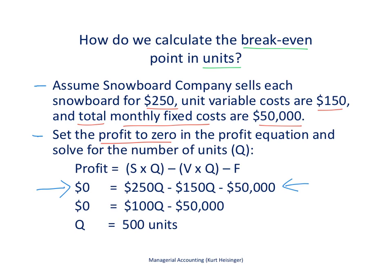We are calculating Q, the one unknown. Profit is zero, the sales price per unit is $250, the variable cost per unit is $150, and total fixed costs are $50,000 per month. Running the numbers, we determine that we have to sell 500 units per month to breakeven. Anything above that and we start making profit; anything below that and we incur losses.